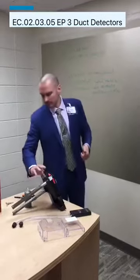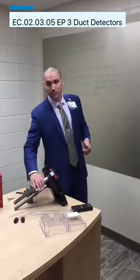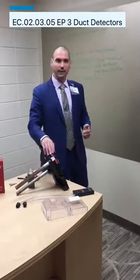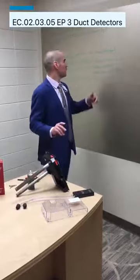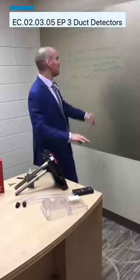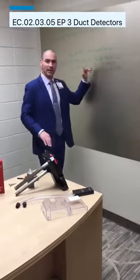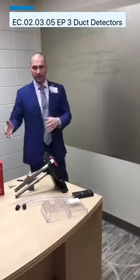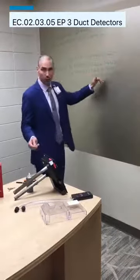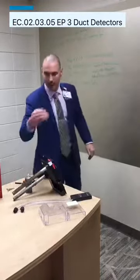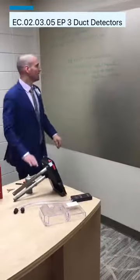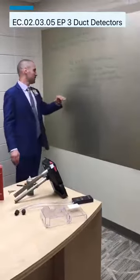Let's recap: visual inspection — check the tubes are sloped down, not clogged, and holes are facing the right direction. Functional smoke test — make sure the smoke head actually activates. Velocity — make sure air velocity meets requirements. Differential pressure — make sure air is coming into the housing.